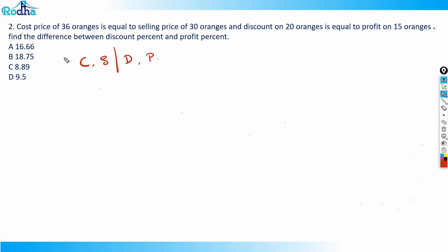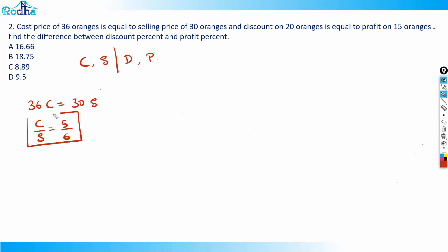From the first condition: cost price of 36 oranges equals selling price of 30 oranges, so 36c = 30s. This is a beautiful application of ratios. Solving gives c/s = 5/6. From this, the profit percentage is 1/5, which equals 20%.